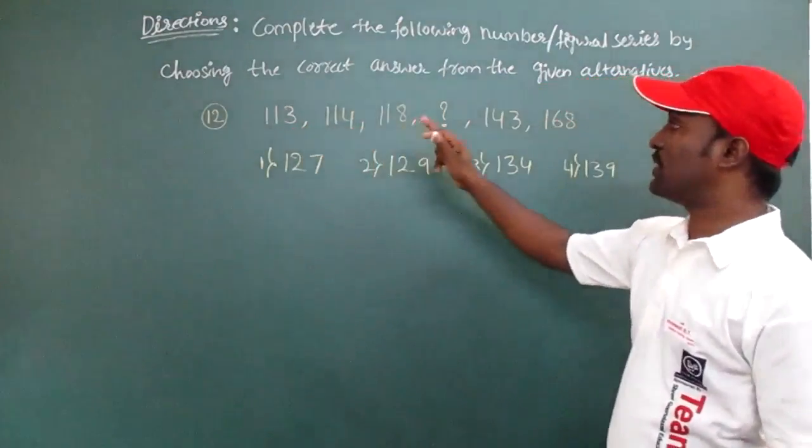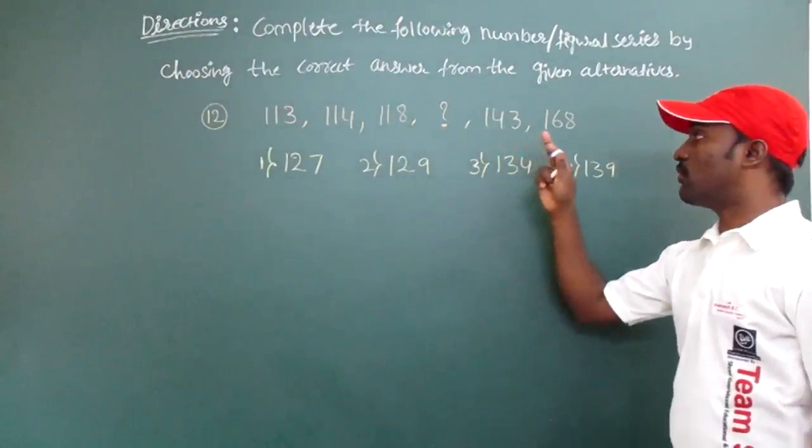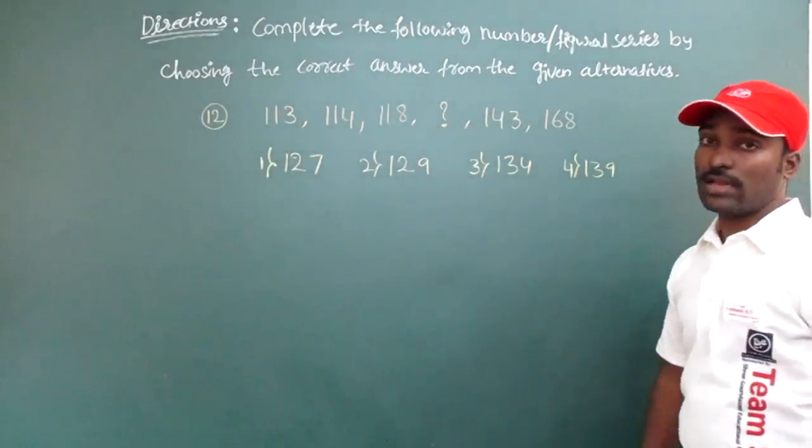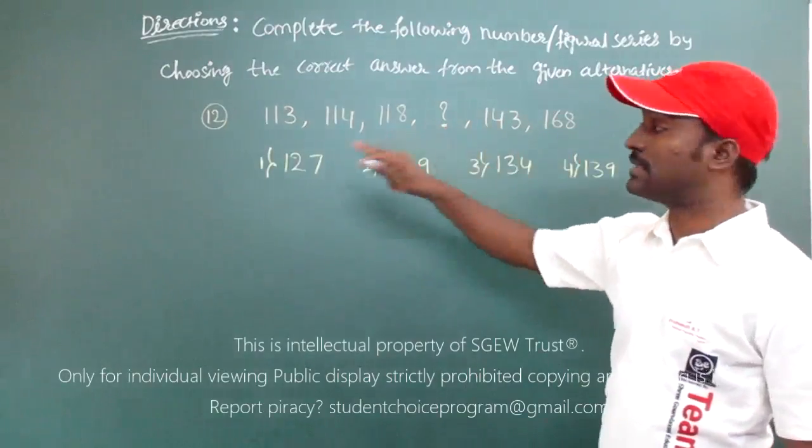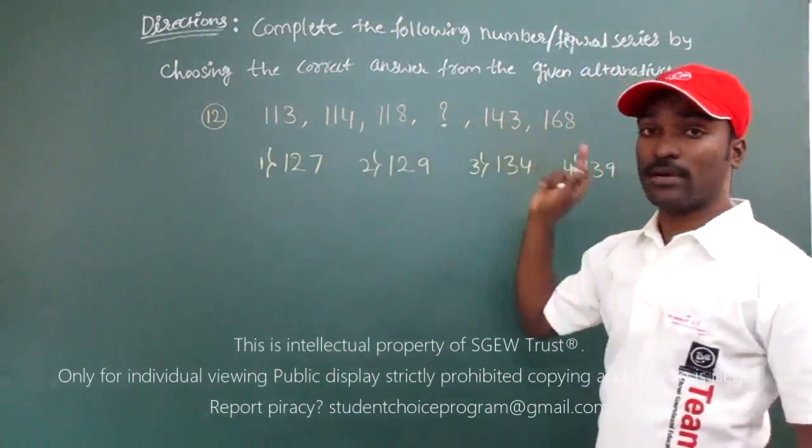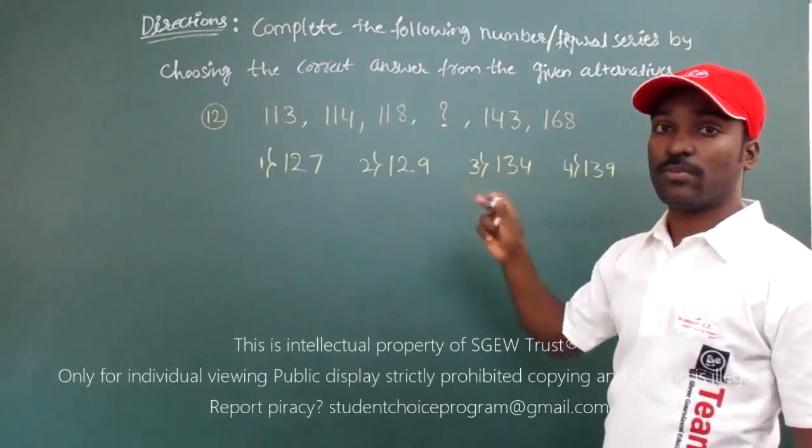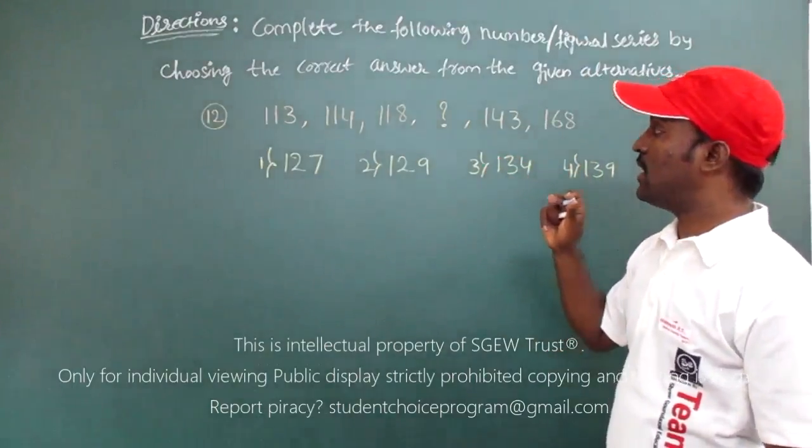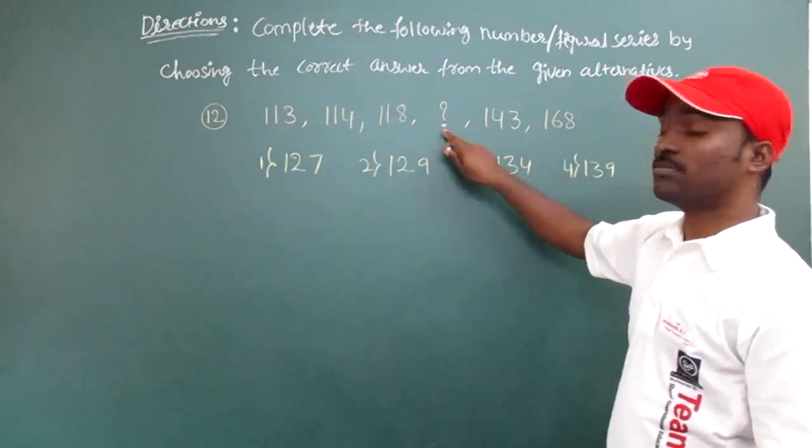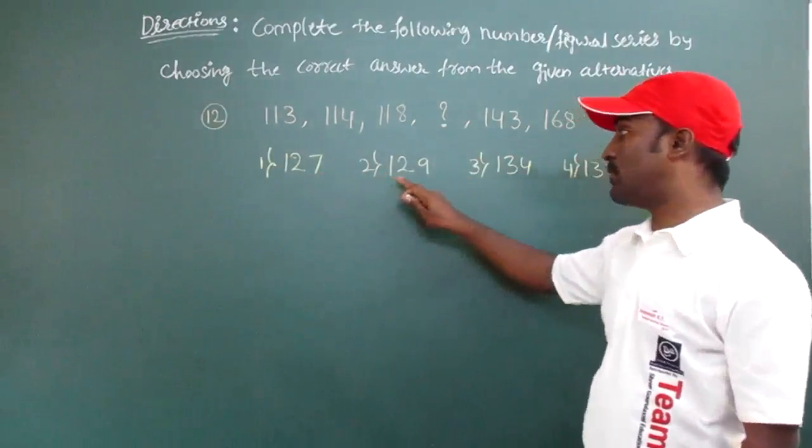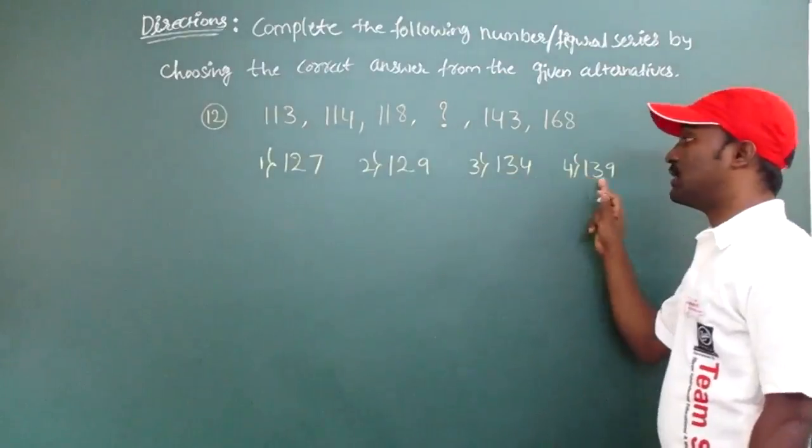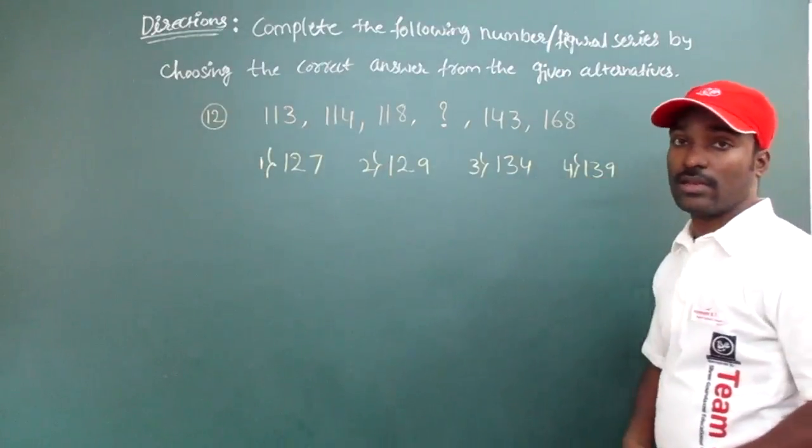So here they have given number series: 113, 114, 118, question mark, 143, 168. And we have to find this missing number. The given options are 127, 129, 134, 139. So these are the given options.